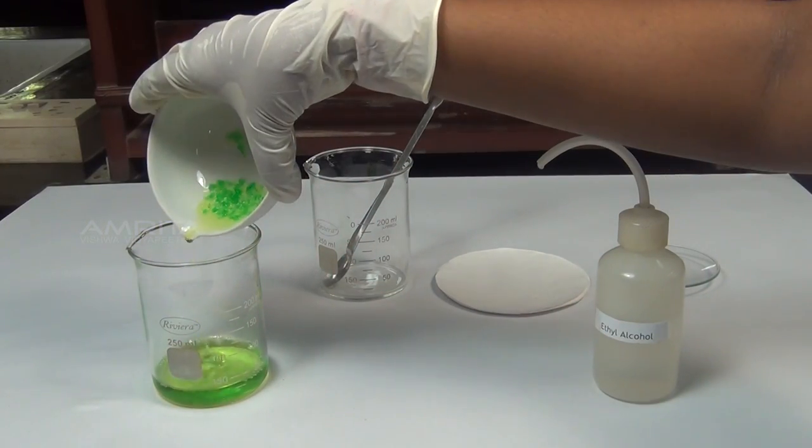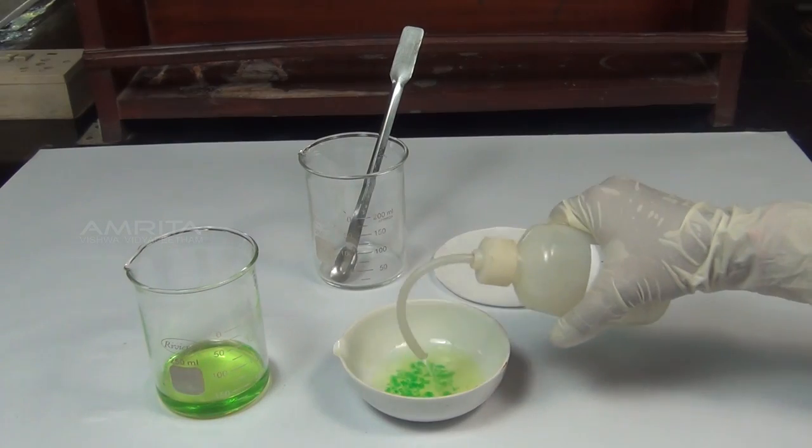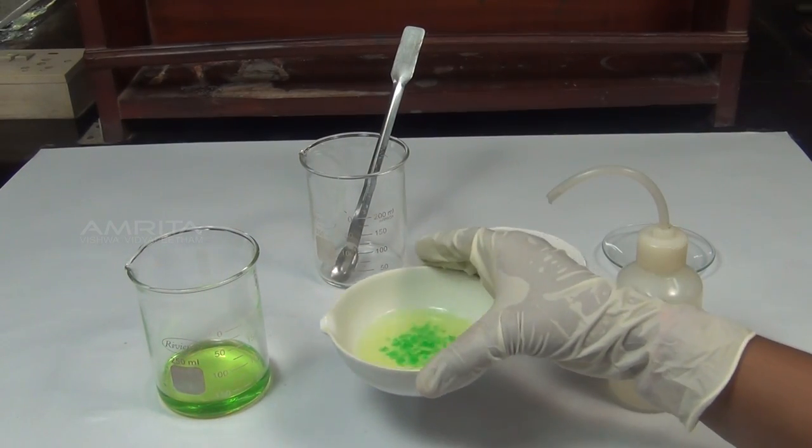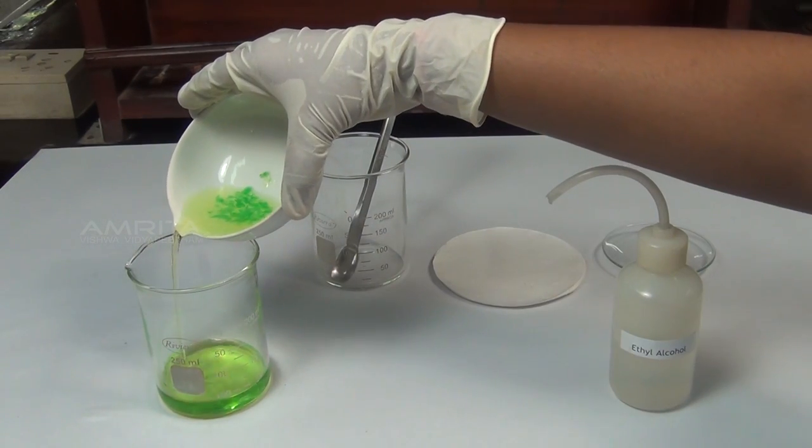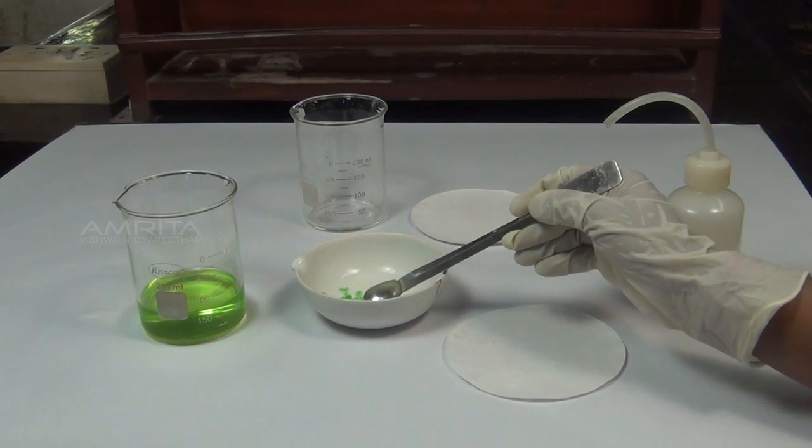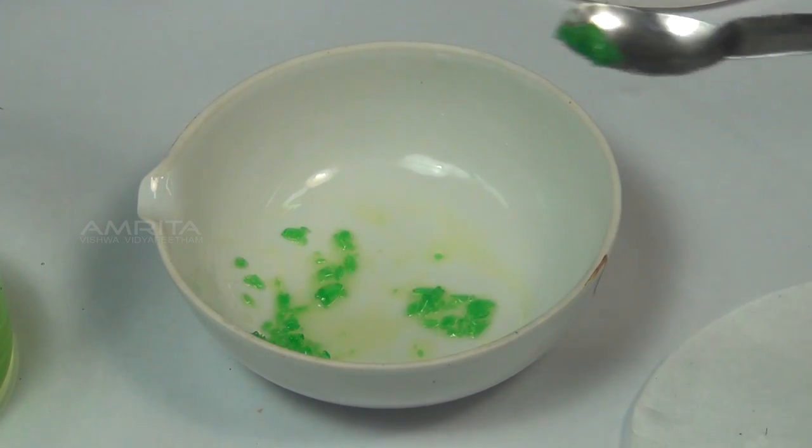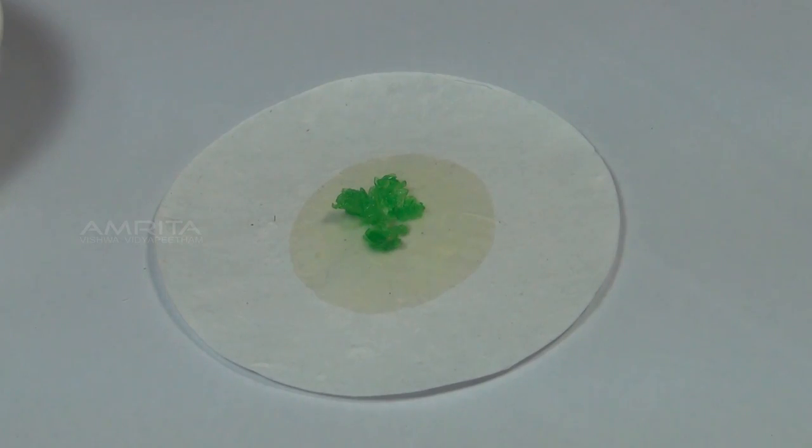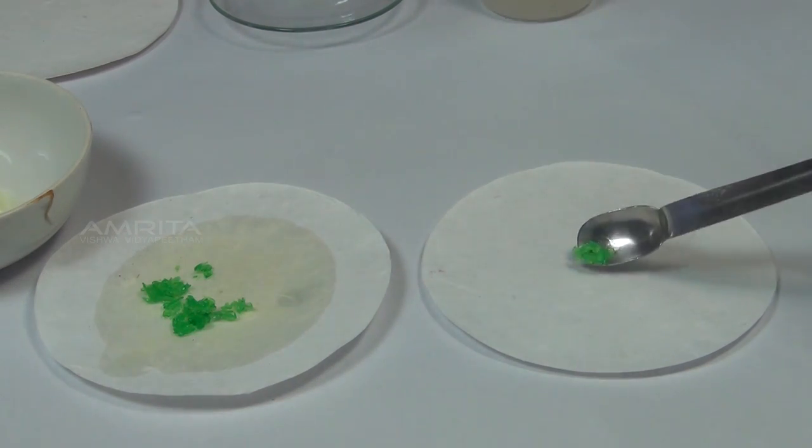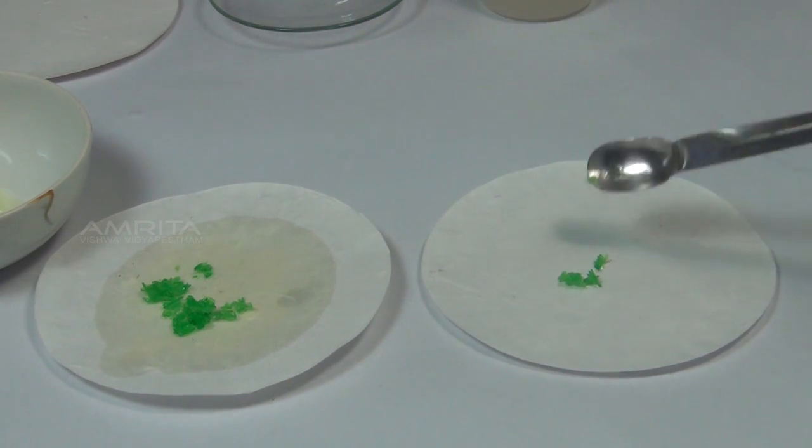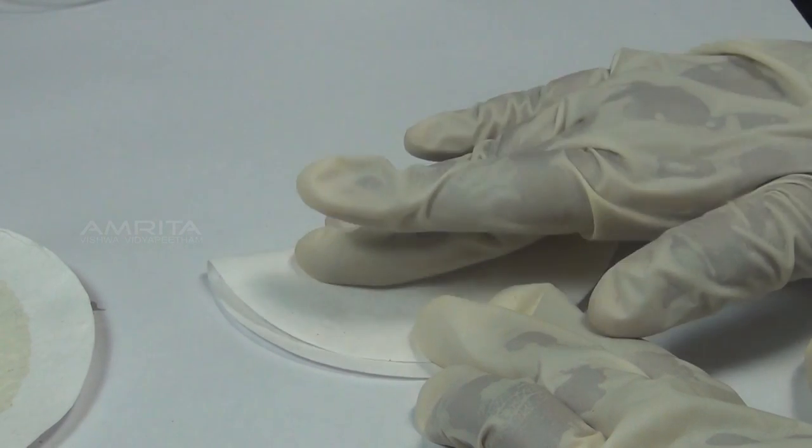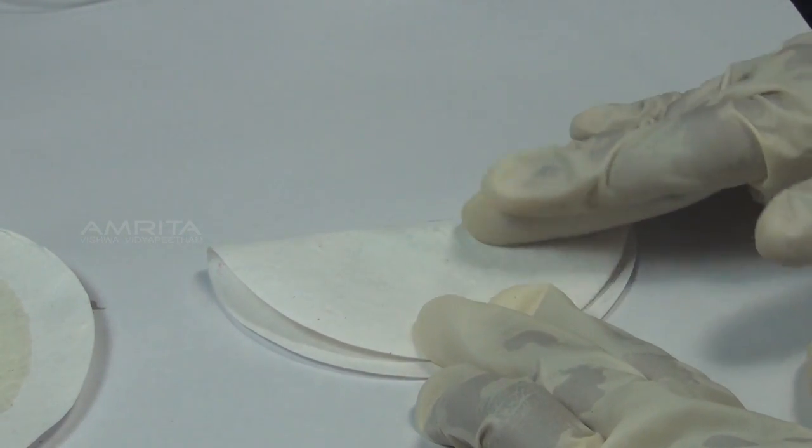Decant the mother liquor carefully into a beaker. Wash the crystals two or three times with small amount of ethyl alcohol. Using a spatula, remove the crystals to a filter paper which soaks up the solution. Transfer the crystals to another filter paper and dry them by pressing gently between the folds of the filter paper.